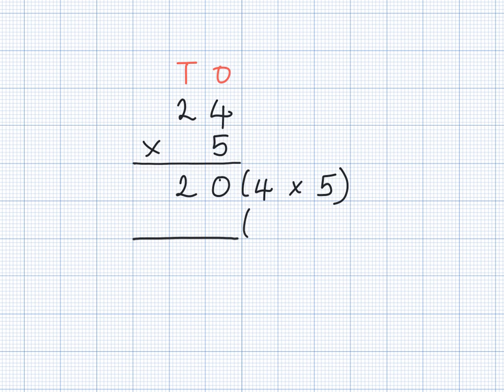Next we multiply the 10s by 5. 20 times 5 can be a tricky calculation. We can do 2 times 5, which equals 10, and multiply the answer 10 by 10. So 10 times 10 equals 100.